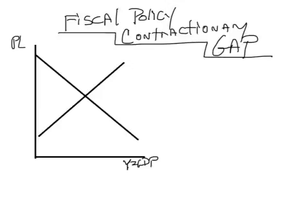I've taken the liberty to start us off with our standard aggregate demand aggregate supply model and I've labeled AD and SRAS, and I'm going to put the short-run equilibrium on the graph as PL1 and Y1.